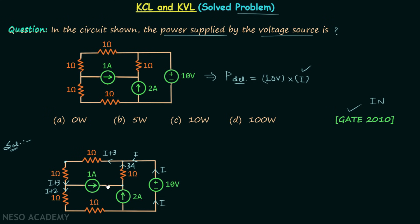1 ampere current is moving in this branch. Moving forward we again have a simple node, and at a simple node no current division takes place, so I plus 2 will be the current through this resistor as well. At the next node, current division will take place since it is a principal node. I plus 2 is the current entering, out of which 2 ampere current is leaving, so we have current I remaining — which is correct.